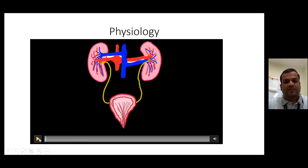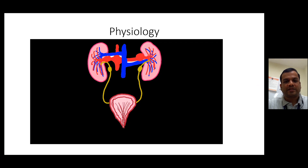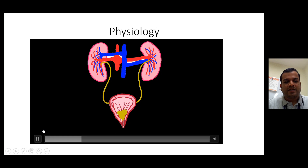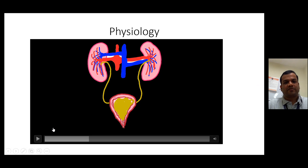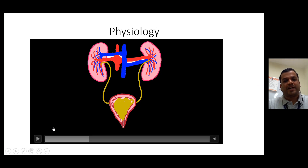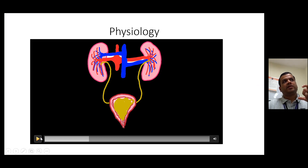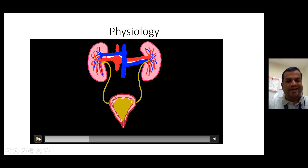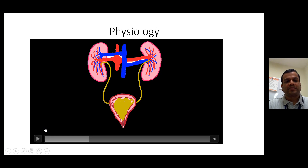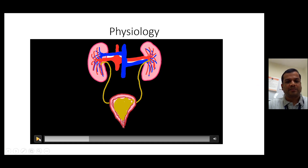Urine is manufactured in the kidneys, comes down to the ureters, and is stored in the bladder. After a few drops it's not much, but once it keeps filling up to capacity, you feel the urge to go to the toilet, and then you go and pass urine. That's the normal process.